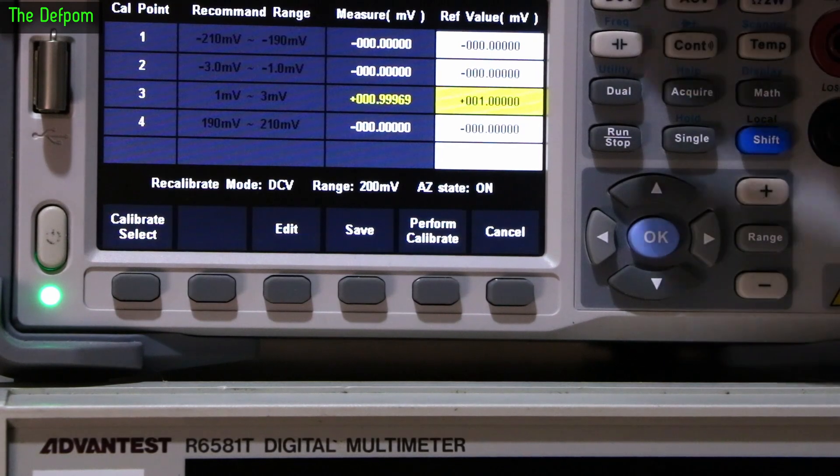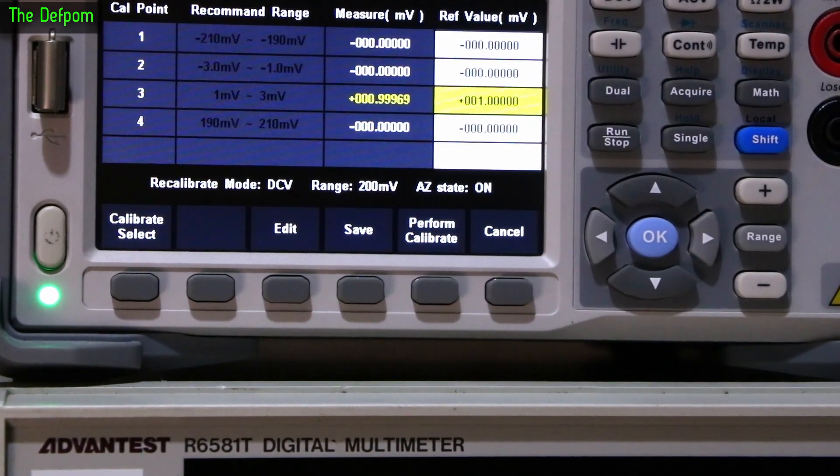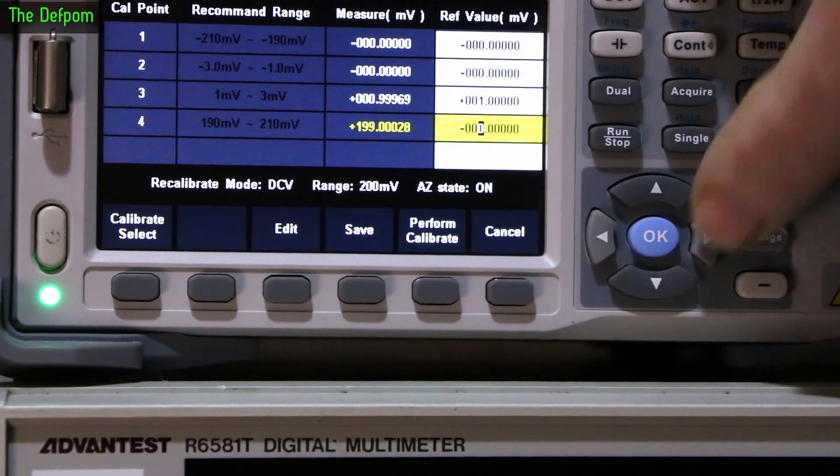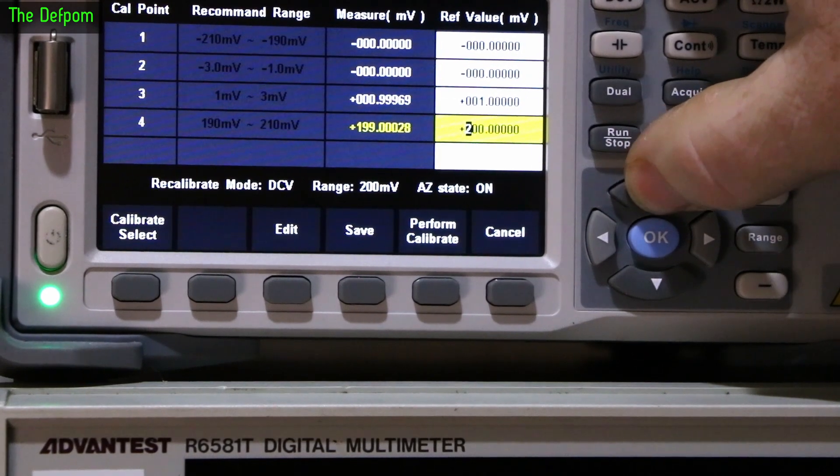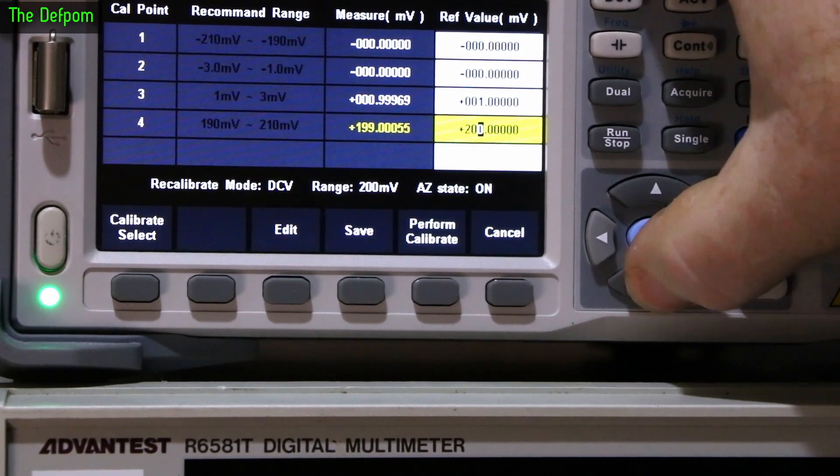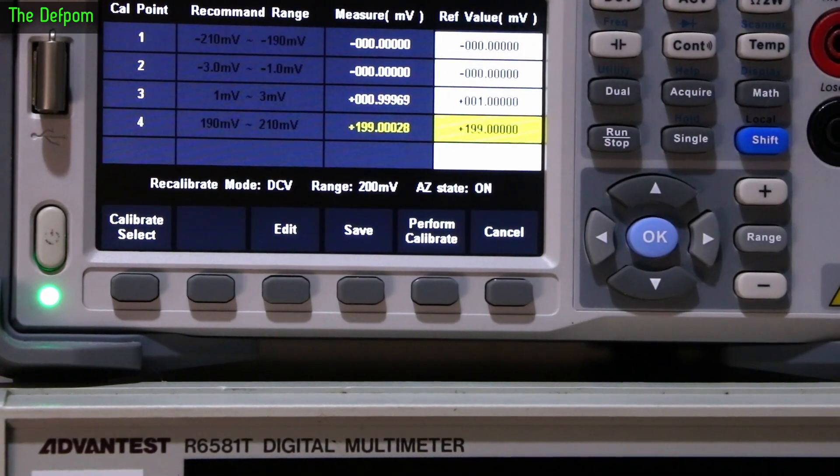I don't think sequence actually matters because you've got to submit them all at one time. Now we'll do the positive 199 millivolt. Calibrate, stabilize. Edit, I want to do positive 199 millivolt. That's exactly what's on the Advantest. Save that.